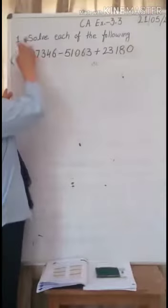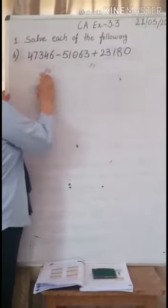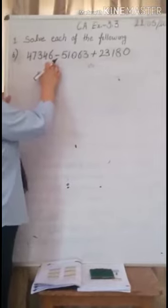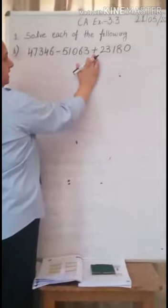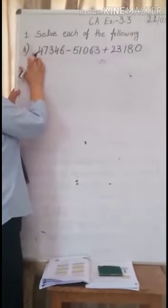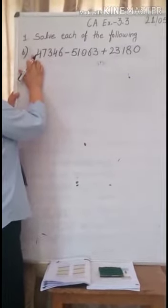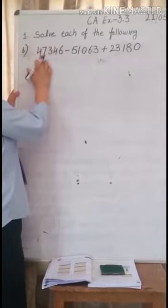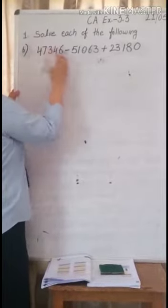Question number 1, part B. In this question plus is there and minus is also there. This number is with plus sign, this number with minus sign. This number does not have any sign, so we assume that number is with plus sign.